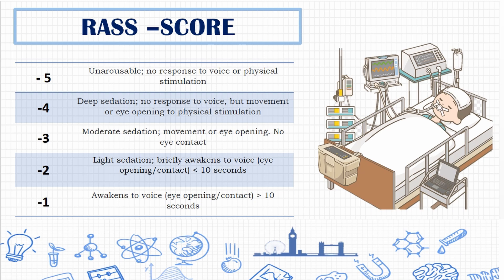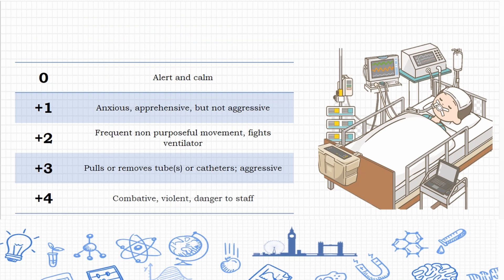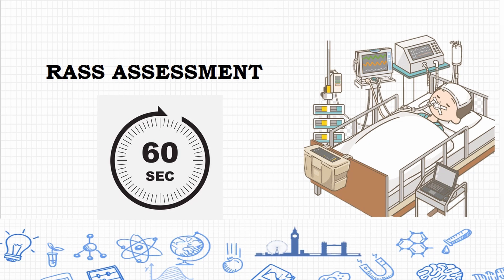Now for the positive scores: zero is alert and calm, plus one is restless, plus two is agitated, plus three is very agitated, and plus four is combative.